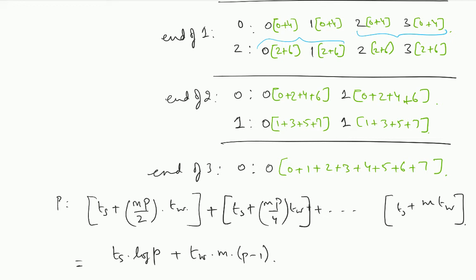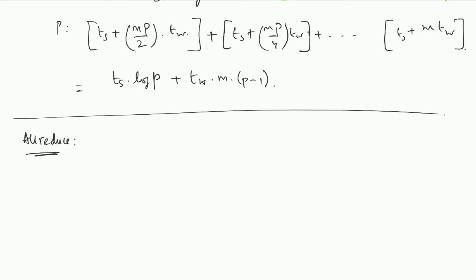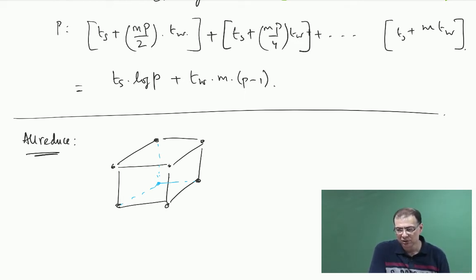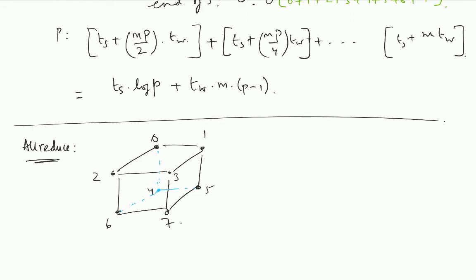That is the reduce scatter algorithm on the hypercube. Most of the algorithms on the hypercube are pretty much similar. Let us look at some of the other collectives — let us look at all-reduce. In all-reduce we have some data on all the nodes and at the end I want to sum it up and I want the results to be available on all the nodes. The data size on each node is m, and for this example I will assume m to be 1, so you have only one element.